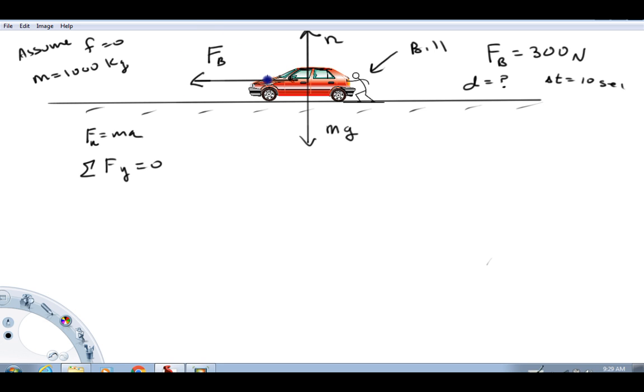When we apply Newton's second law now, the net force is equal to ma. By net force, we mean the vector sum of all forces. I'm going to call left positive because everything's pointing to the left. We have the force that Bill is applying. There are no other forces left or right. So this is the net force acting on that car, and that's going to equal the mass of the car times the acceleration. So 300 newtons equals 1,000 kilograms times A, the acceleration.